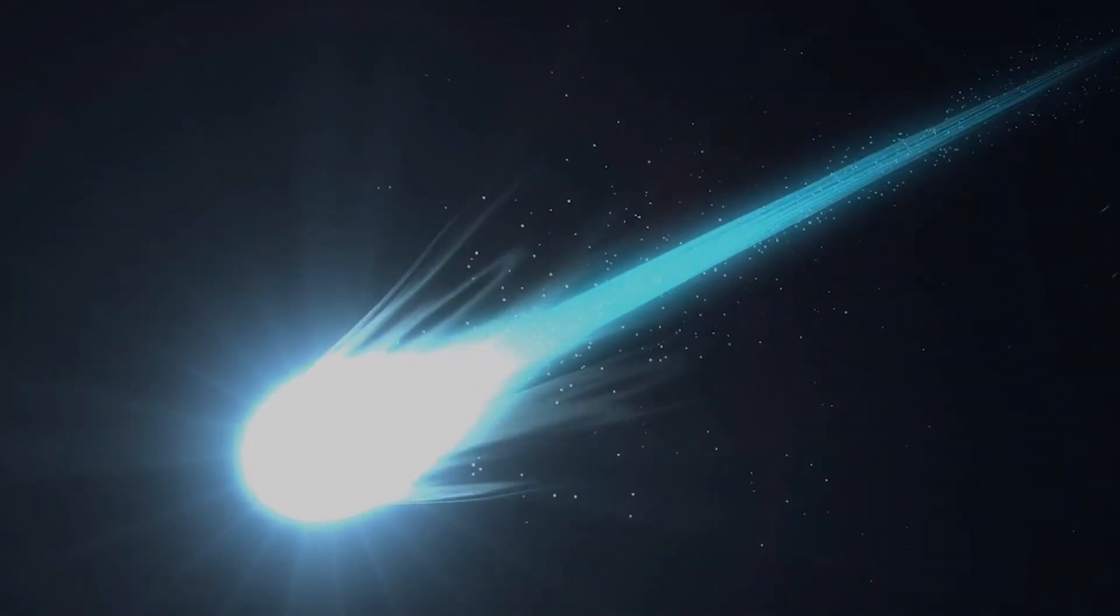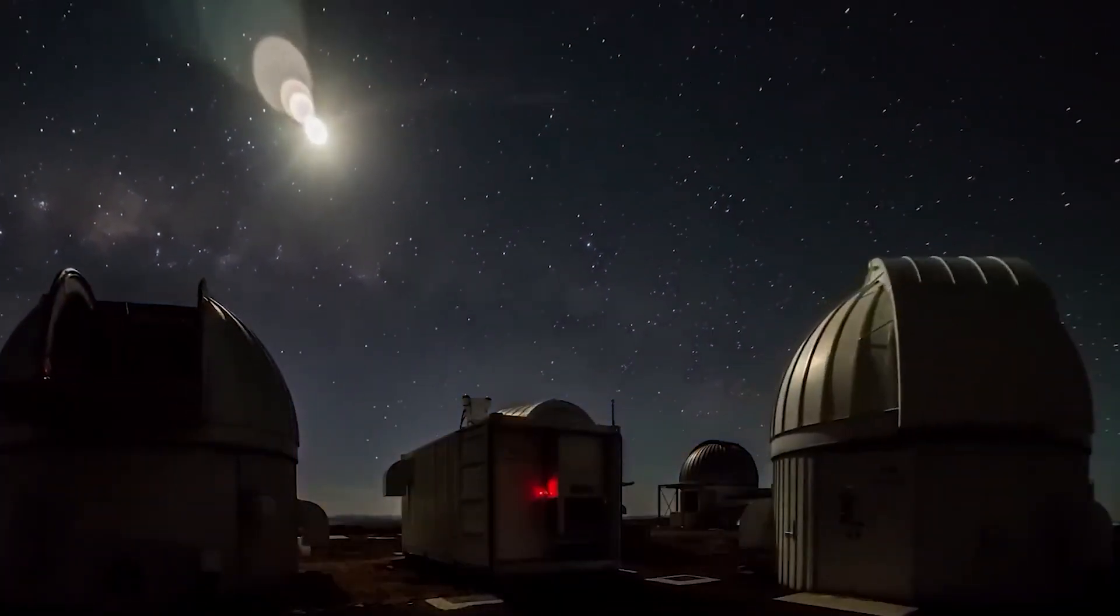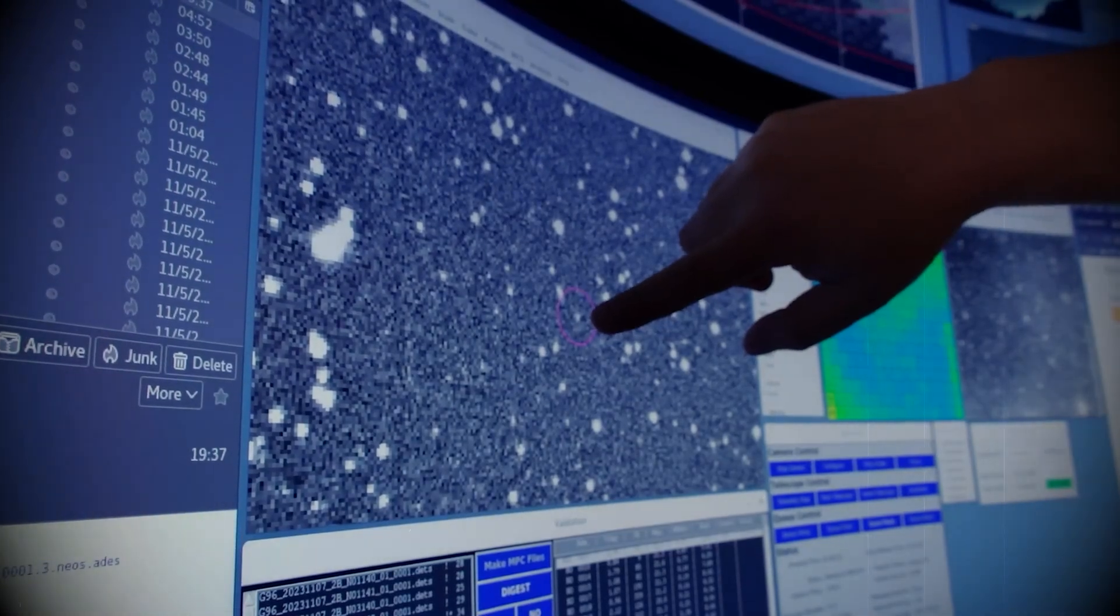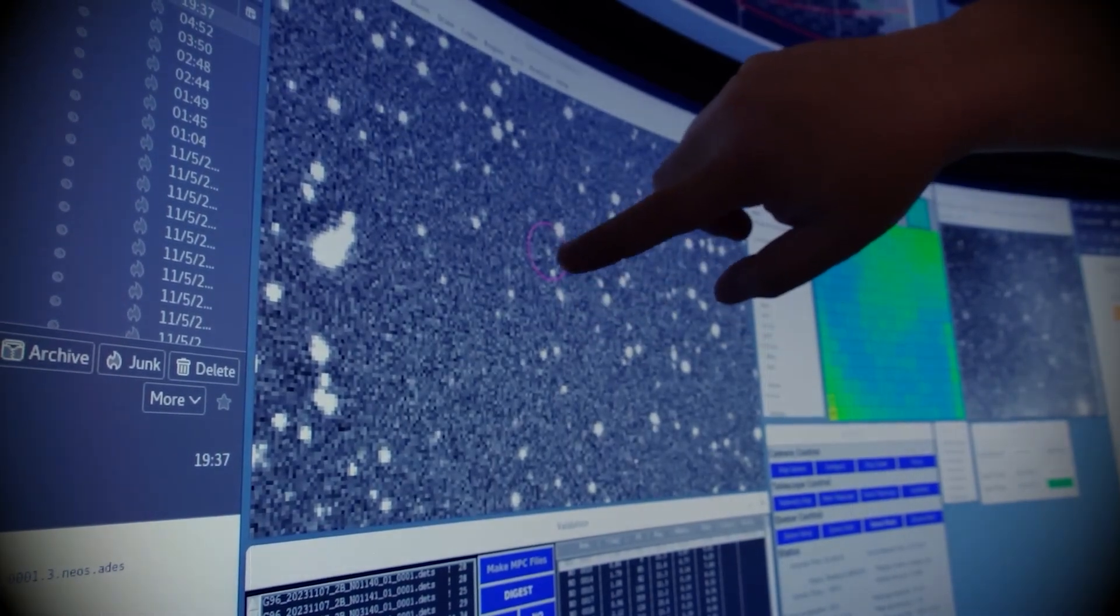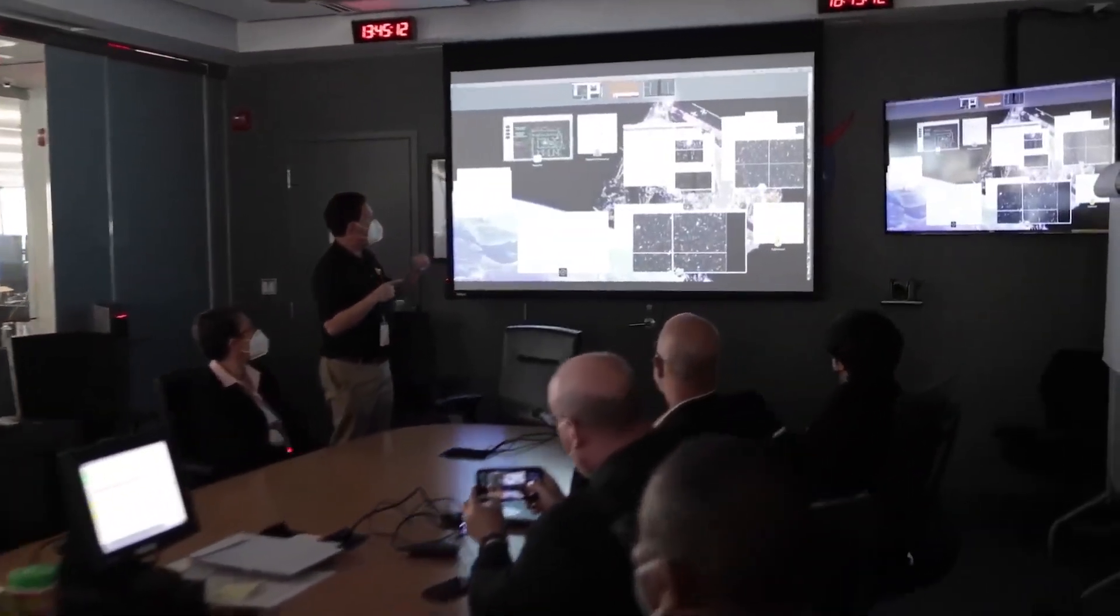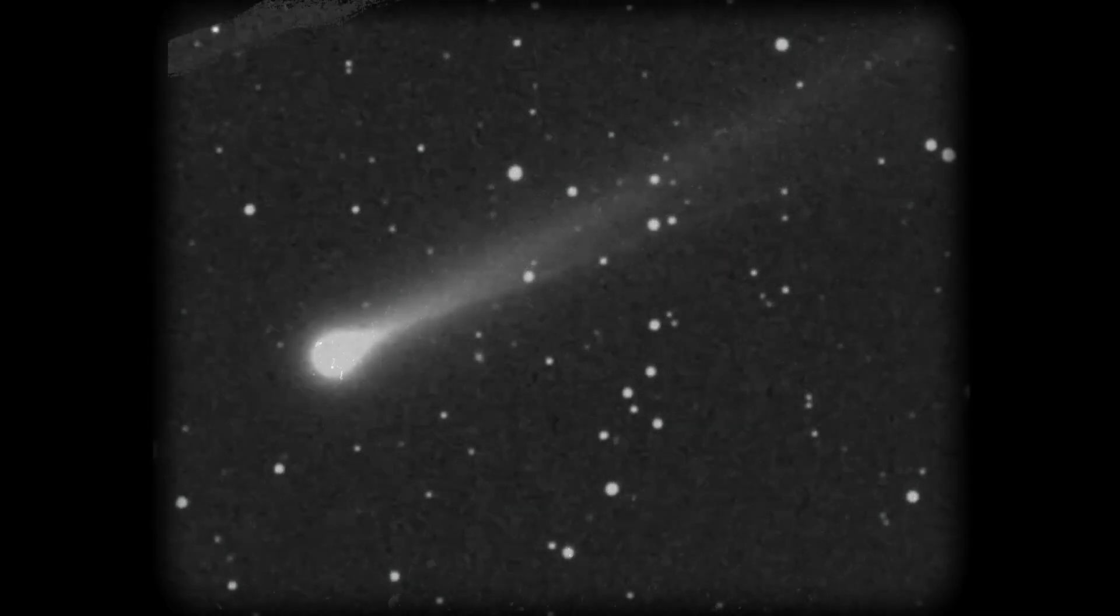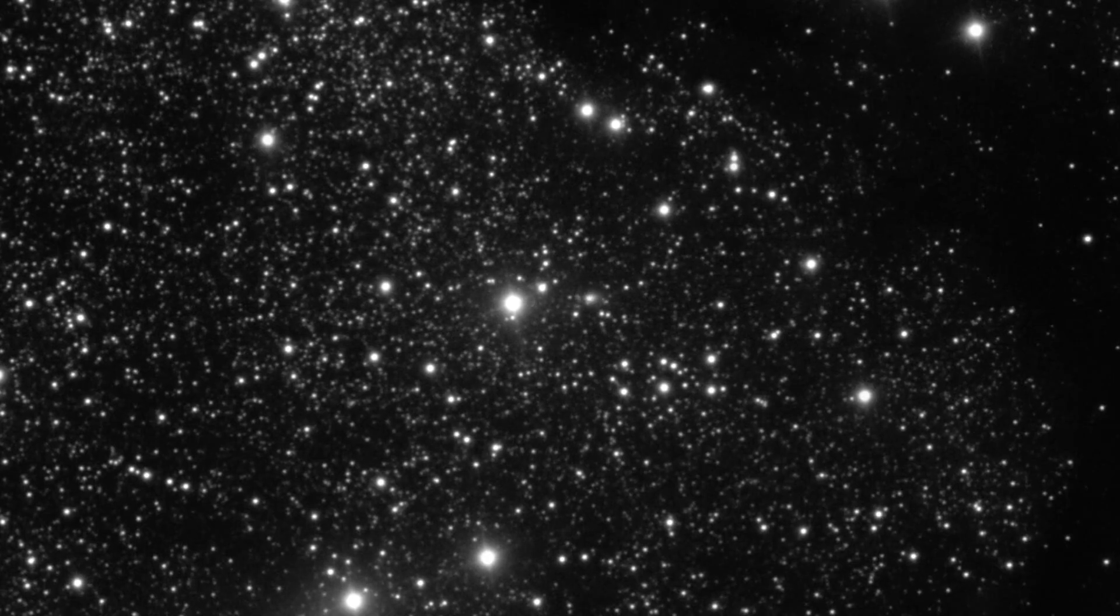The story begins with a faint smudge of light, captured by the Atlas Survey Telescope in Hawaii. At first, astronomers thought it was just another comet from the outer edges of our own solar system. But when they calculated its path, they got a shock. Its trajectory was all wrong. It was moving too fast, and its angle was too extreme. This object wasn't from around here. It was a tourist from another star.